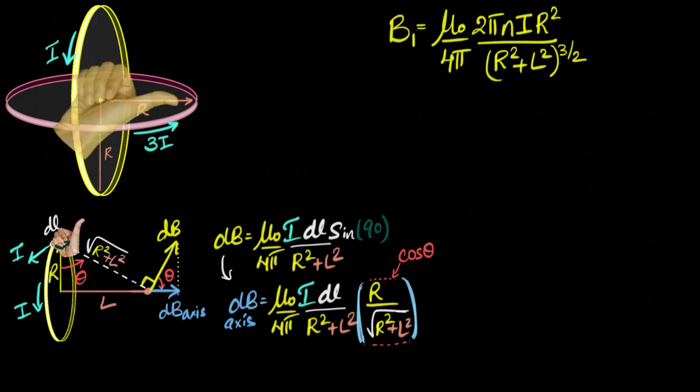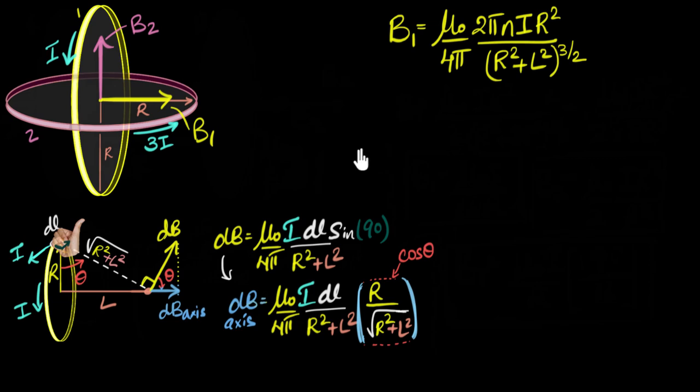Okay, just like before, we first look at the direction of the magnetic field. Let's start with the yellow one. Use my right hand rule. It's going to be this way. So let me draw that. The magnetic field over here, let's call it B1, is going to be in this direction. This is my B1. And the magnetic field due to this one, well, it's flowing this way. So the magnetic field, if I use my right hand, it's going to be like this. So B2, due to the pink one, will look somewhat like this.